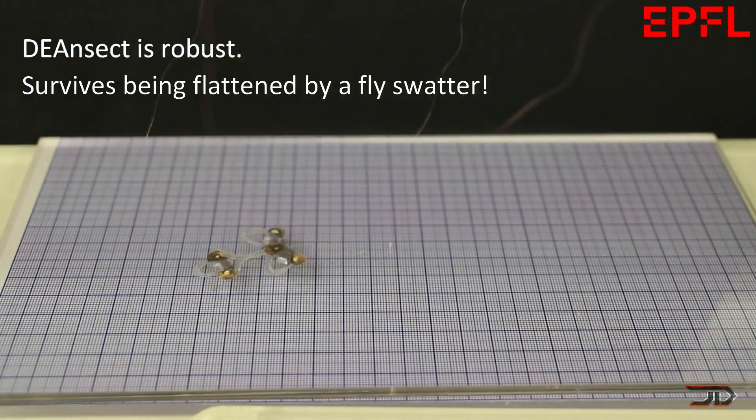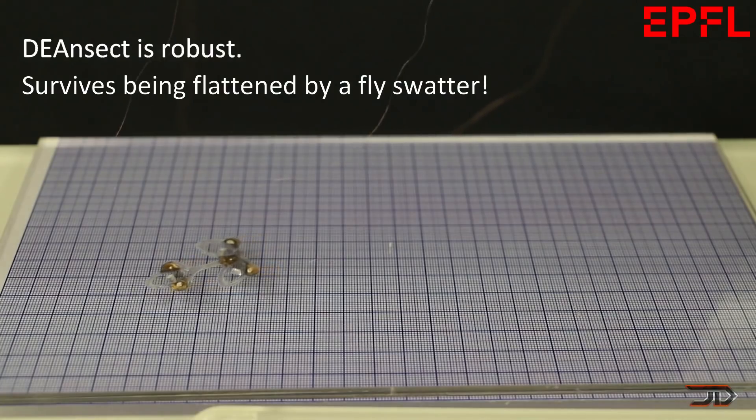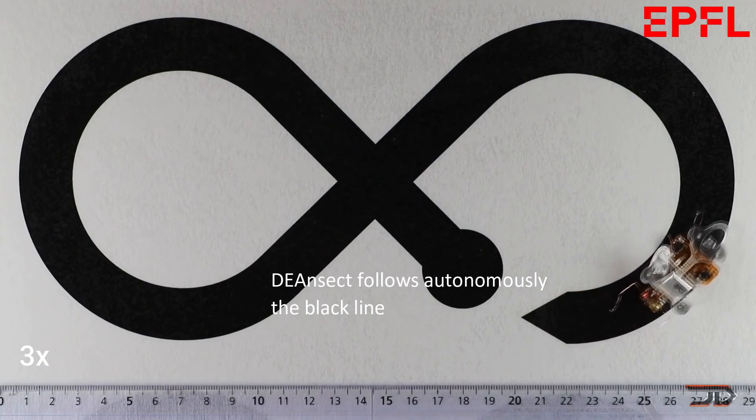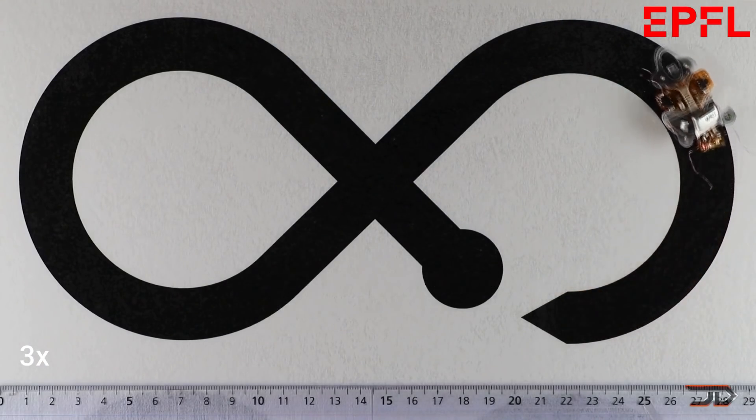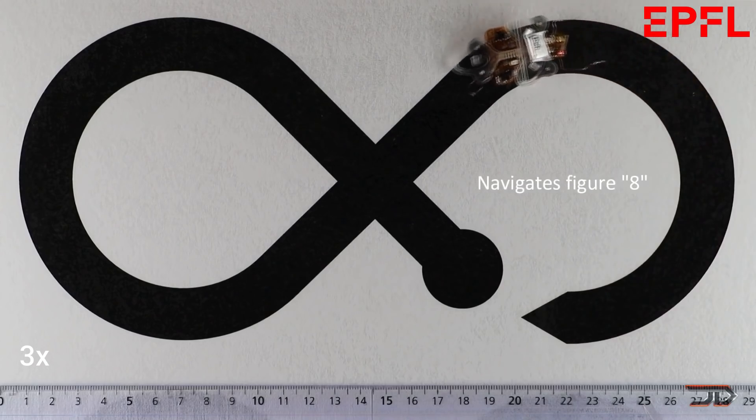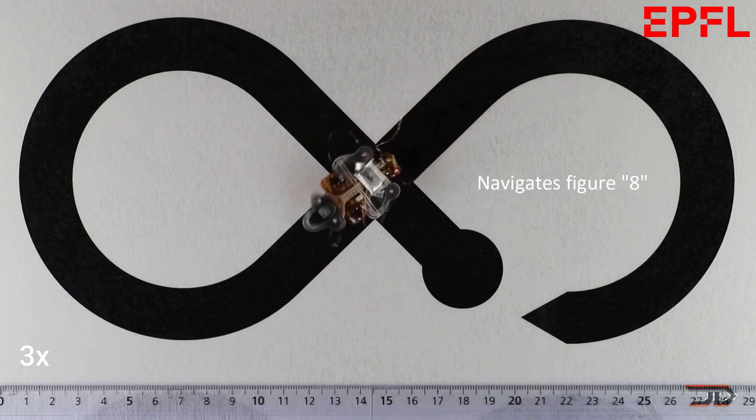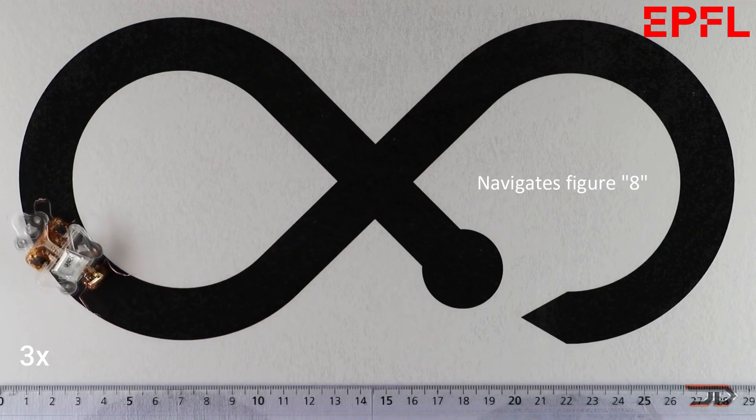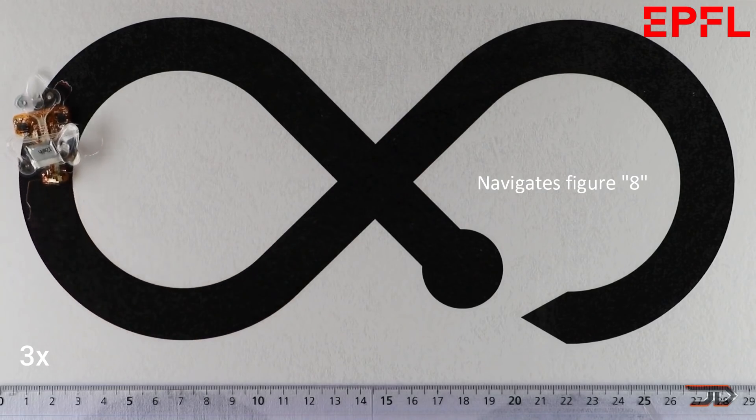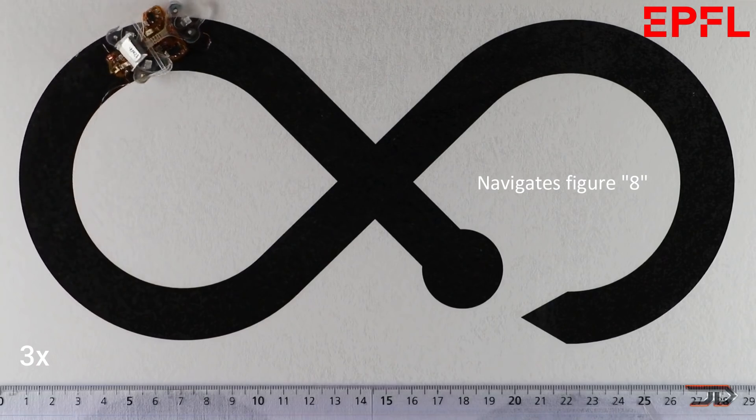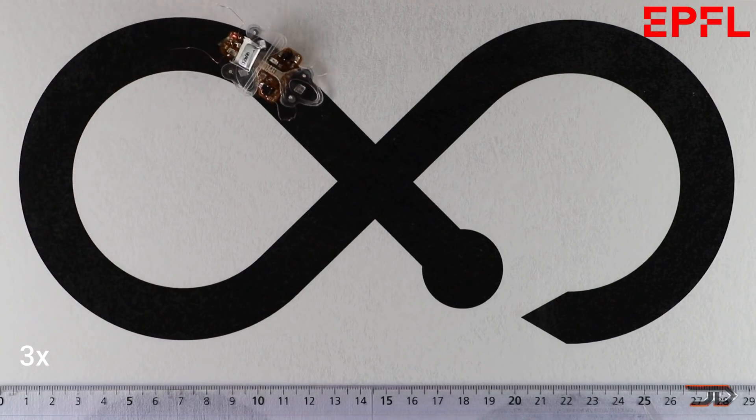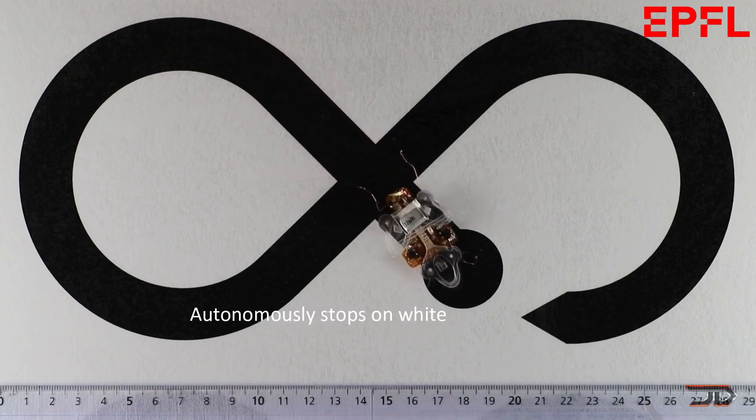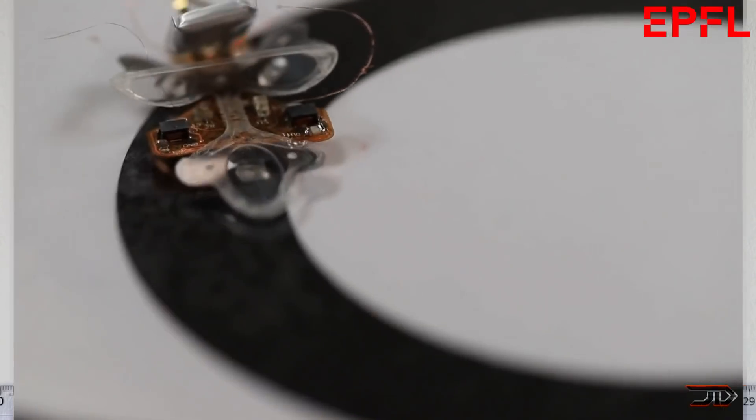When a voltage is applied, its electrodes are drawn together and the leg moves. This happens around 400 times per second, and it allows the Dean Sect to move forward at 1.2 inches a second, which may not seem too much, but it's actually pretty good for this size of robot. Two versions exist, with one carrying its own onboard power supply, and the one you can actually swat at, which is connected to an external source.